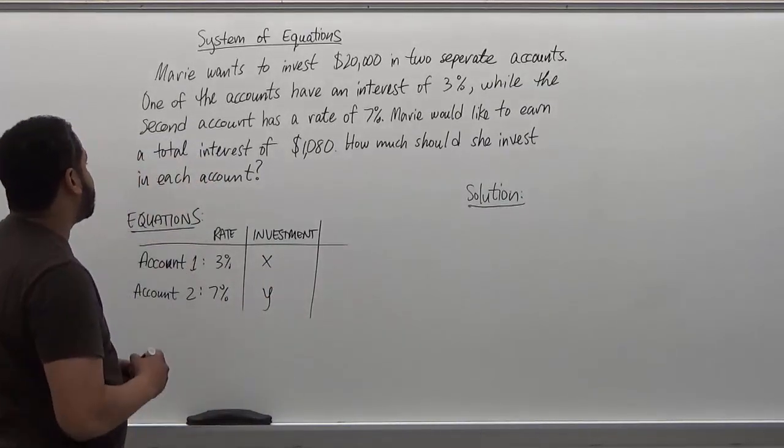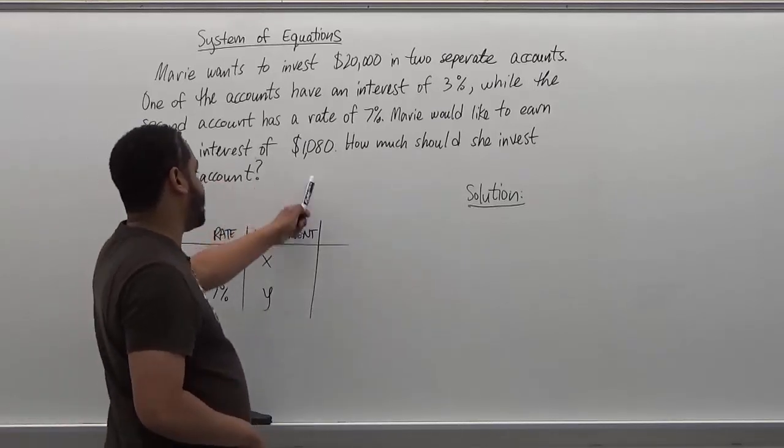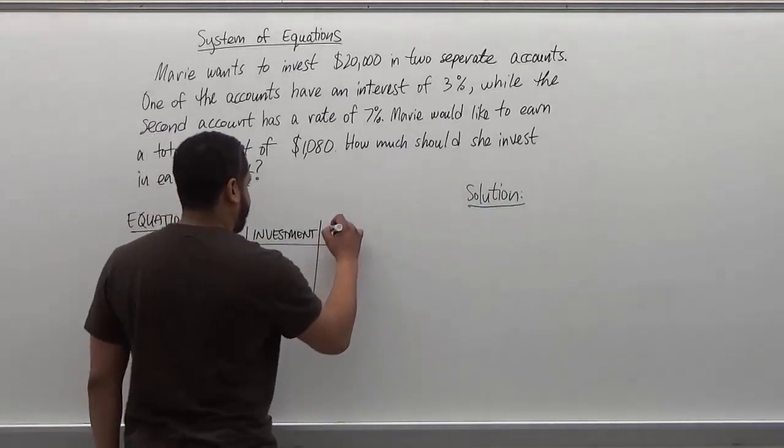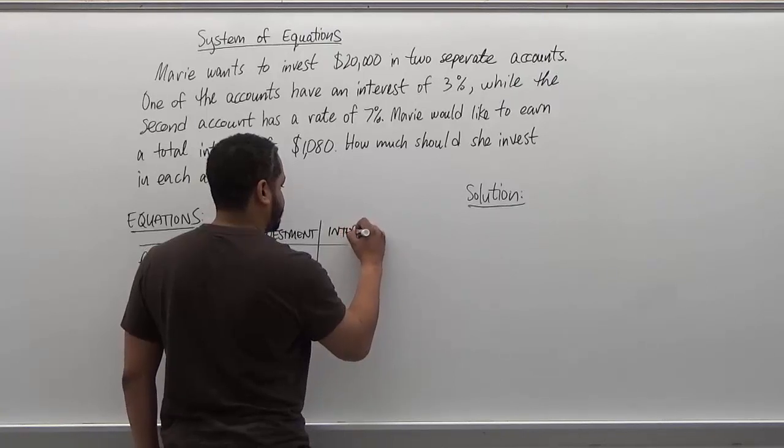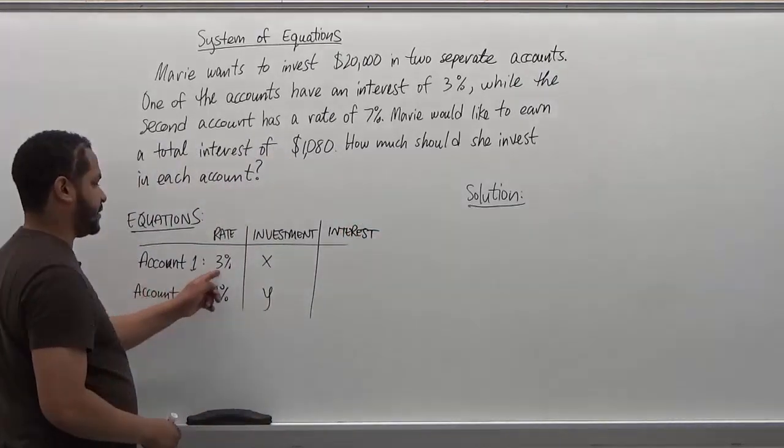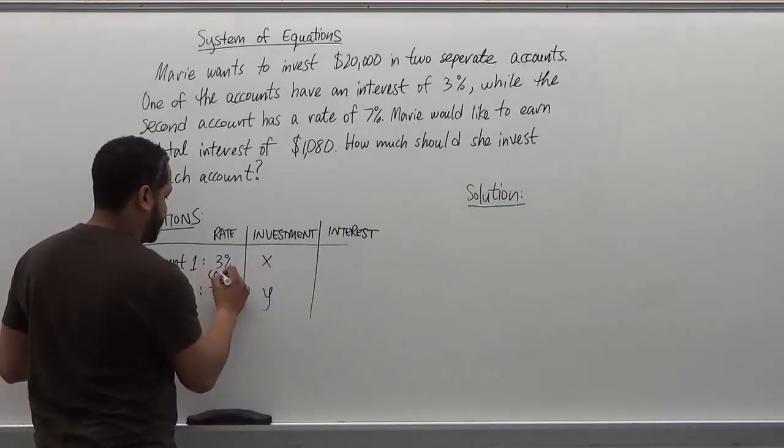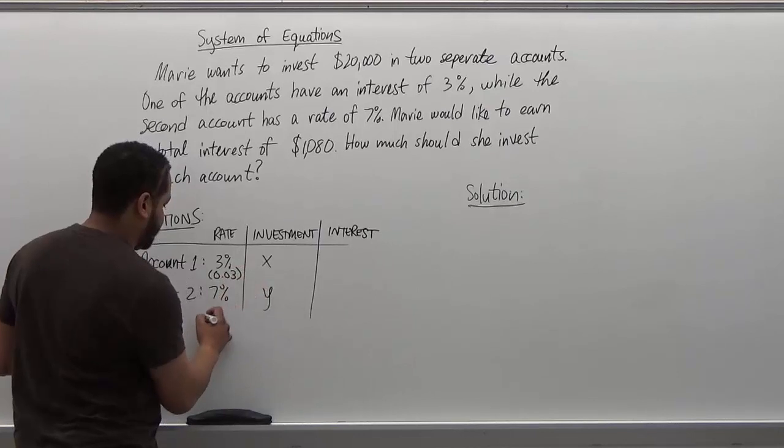And the final step says the interest should add up to $1,080. So here we have the interest. And the interest of the first account is 3% times x and let's just keep in mind that the percent of interest here is 0.03, the percent of interest here is 0.07.